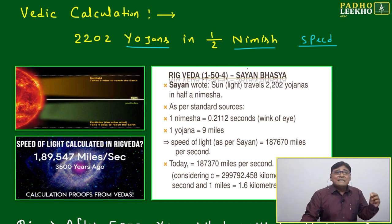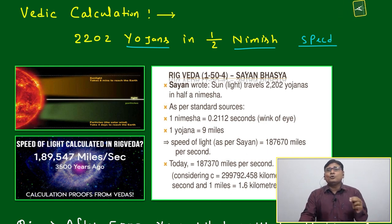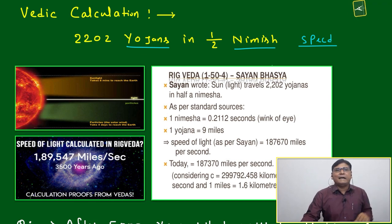Still, if you come to South India, people speak nimisha. Nimisha generally means second, but the exact value: one nimish equals 0.2 seconds. That is the wink of your eye. If you are just blinking the eye, that will take 0.2 seconds.